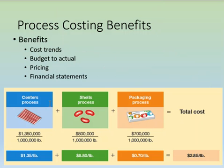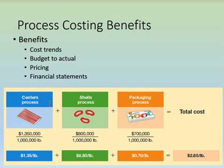With process costing, managers use the cost of each product to help control costs. For example, they can compare actual production costs to the budget or plan, and if costs are running too high, look for ways to reduce them in that particular process. Managers also consider total cost when setting prices — the price must be high enough to cover costs and return a profit. The total cost to produce a product is the sum of the costs for each process. Benefits of knowing process costs include comparing costs across production batches to determine if costs are rising or falling.